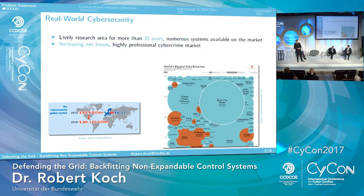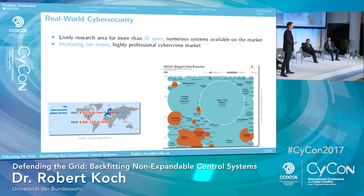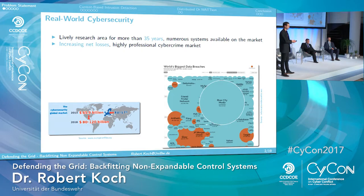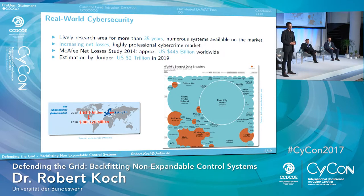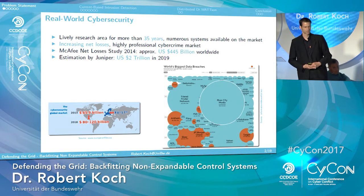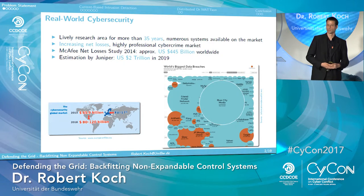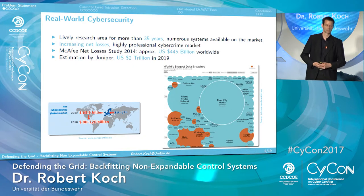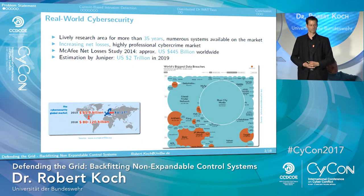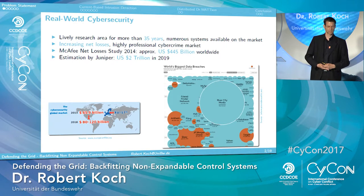On the other hand, we see an increasing amount of net losses and data accidents. This graph is from informationisbeautiful.net. McAfee made a very interesting study in 2014 and estimated the loss from cybercrime to be approximately 445 billion dollars worldwide. We can say maybe this year about 700 to 800 billion. Juniper made an estimation that it will come up to 2 trillion US dollars by 2019 — a lot of money burned by that.